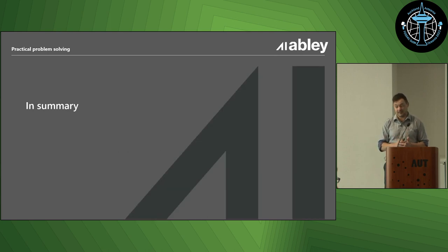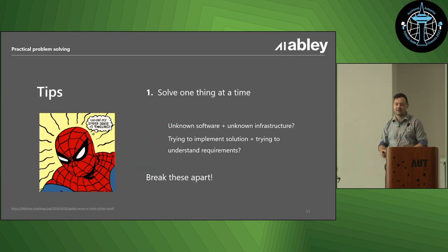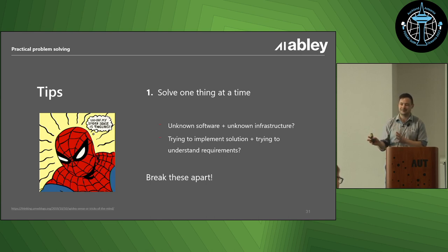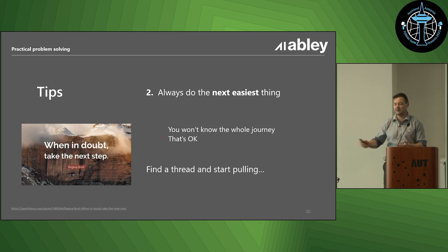So that's the core of it. In summary, you really need to understand the actual problem and break it down into smaller parts. Always make sure you're focusing on and trying to solve one thing at a time. Reduce that complexity into as fewer dimensions as you possibly can. If you've got unknown software and unknown infrastructure, pick one prototype. If you're trying to implement the solution while you're trying to understand the requirements, break it down and prototype. Always just try to do the next easiest thing. You won't know what that is, but after a while you get a sense for something that feels like a loose thread you can start to pull at. You won't know the whole journey - that's okay. Just take a step, make some progress. It'll probably work out.